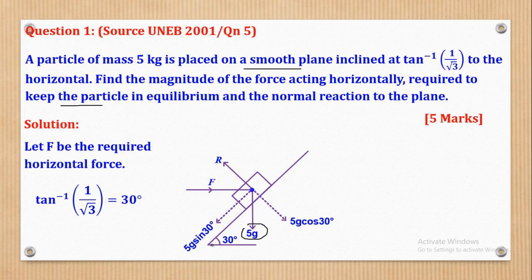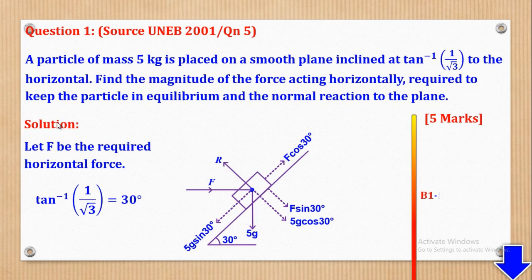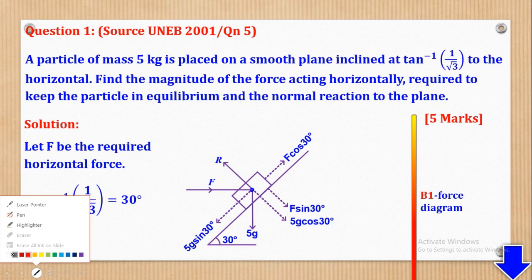We also have to resolve the horizontal force parallel to the plane and perpendicular to the plane. Parallel to the plane it will be F cos 30 degrees. This is because this angle and the angle between the force and the plane are the same — they are alternating angles — so this will also be 30. Where the angle lies becomes cos, so the component along the plane will be F cos 30. Perpendicular to the plane, it will become F sin 30 degrees.